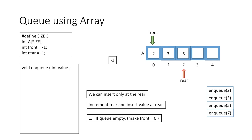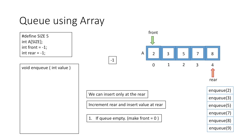Again if we enqueue 7, we increment rear and insert 7 at index 3, and again if we enqueue 8 we increment rear and insert 8 at index 4. Now we can observe that our queue is full as it has a capacity of 5 elements and all 5 are in the queue. Therefore if we try to enqueue another element, say 9, we cannot insert it as the queue is already full. So while inserting, if the queue is full we don't increment rear and we simply say that we cannot enqueue as the queue is already full.